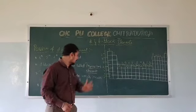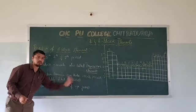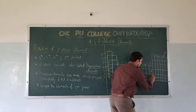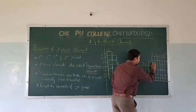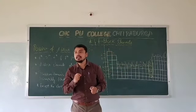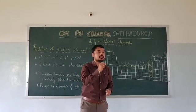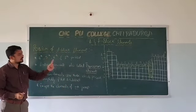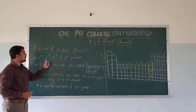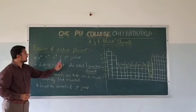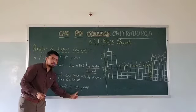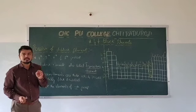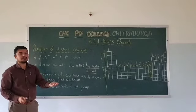Elements that do not belong to transition elements contain a completely filled D-subshell. This is all about the position of D-block elements in the periodic table. The 4th, 5th, 6th, and 7th periods contain D-block elements. The 12th group is not considered as transition elements because it contains a completely filled D-subshell. Now let's move on to the next topic.